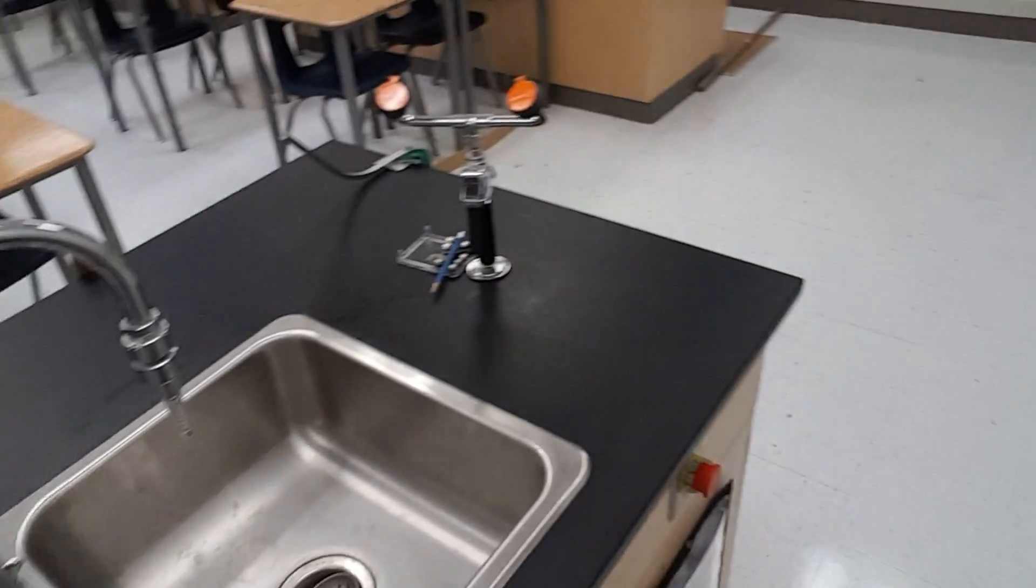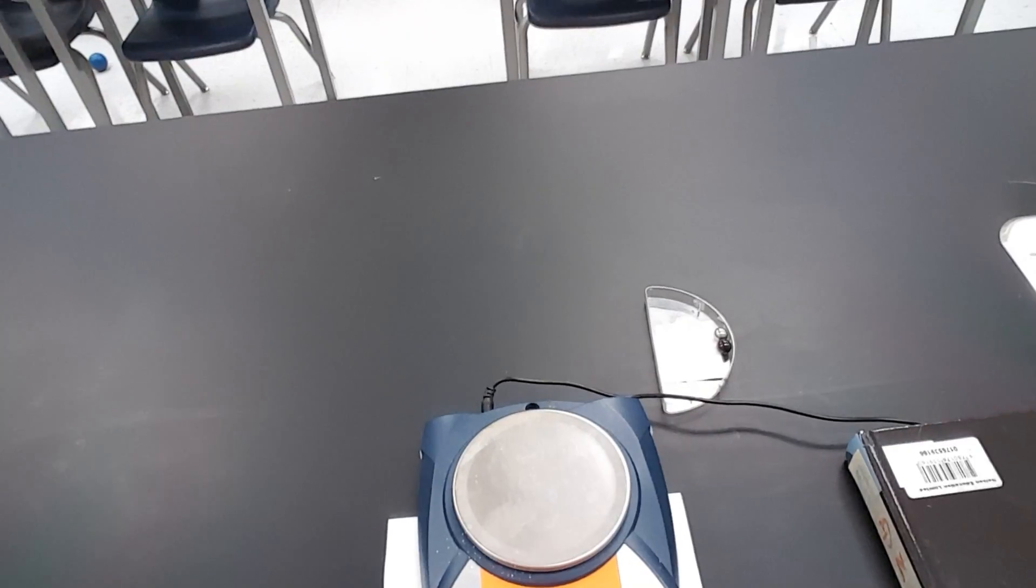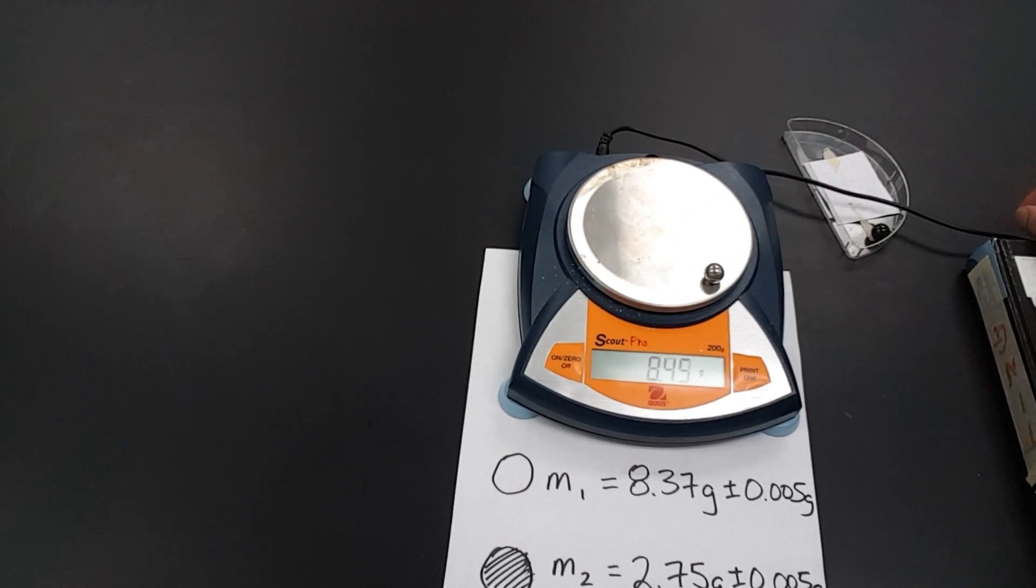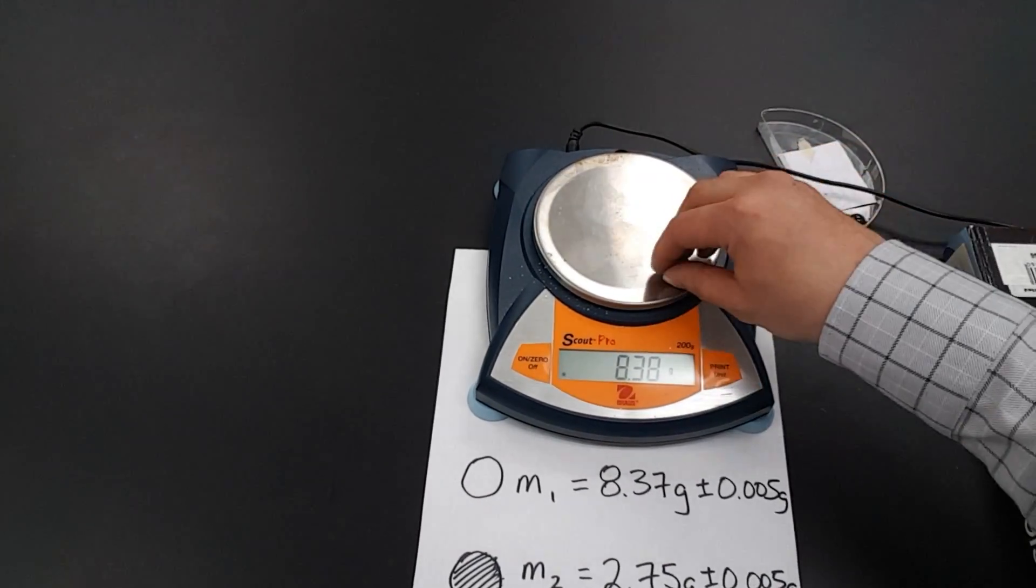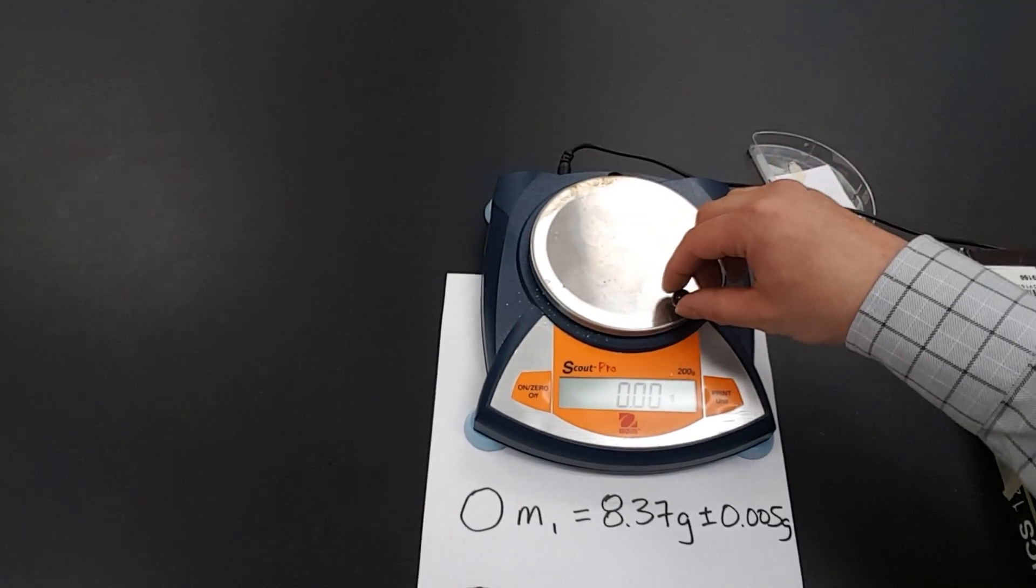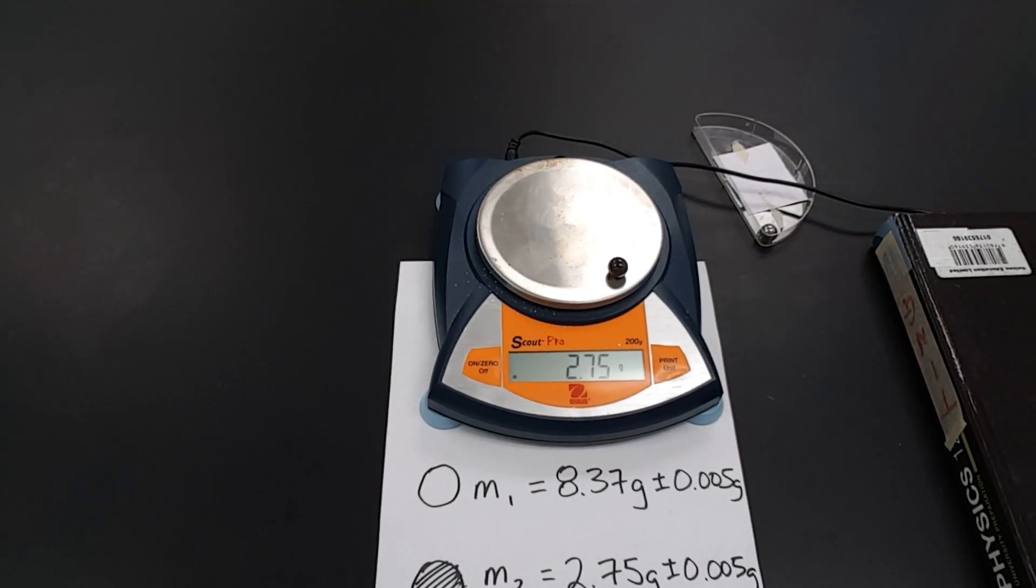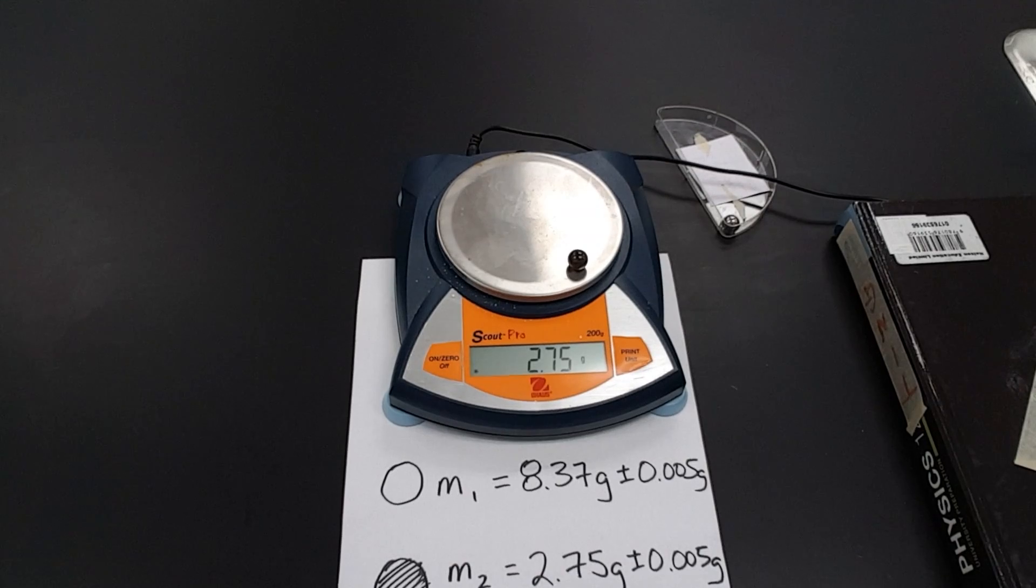Also before we continue on the lab, it is important to measure out the initial masses. We have two masses involved. Mass one, which is the ball bearing. This will be the heavier mass. And then we have our lighter mass, the one made out of plastic. And even in these measurements, you would have noticed there was an uncertainty associated with it.